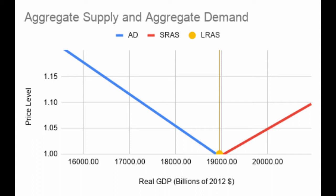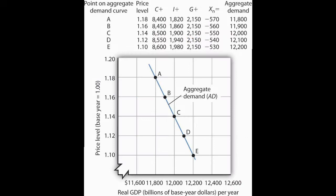We graphically represent the relationship between the price level and aggregate demand using the AD curve, which is downward sloping, or negatively related to the economy's price level because of rational reactions from the sources of aggregate demand to price changes.